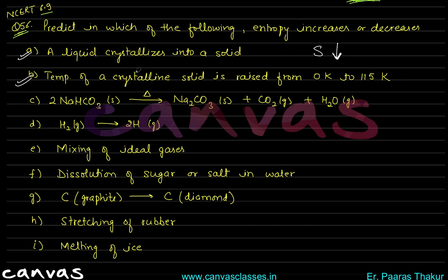Second case: the temperature of a crystalline solid is raised from 0 Kelvin to 115 Kelvin. When temperature increases, heat is given to the molecules, and their kinetic energy increases. As a result, molecules move randomly — so disorder and therefore entropy will increase.